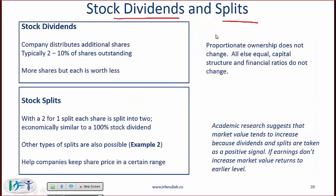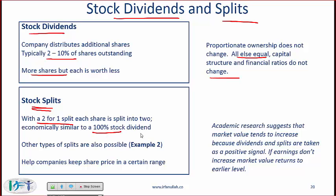Next we come to stock splits and stock dividends. In a stock dividend, a company distributes additional shares — normally between 2 and 10 percent of shares outstanding. As a shareholder you get more shares but each share is worth less. The proportionate ownership does not change, and all else equal, capital structure and financial ratios do not change because the proportions stay the same. With a stock split you can have 2-for-1, 3-for-1, or 3-for-2 splits. The most common is a 2-for-1 split, where each share is split into two — economically similar to a 100 percent stock dividend.